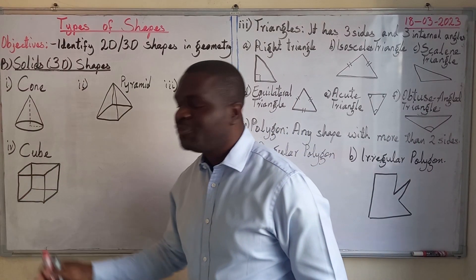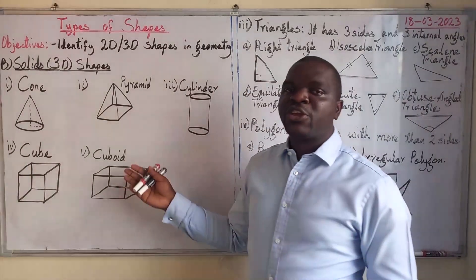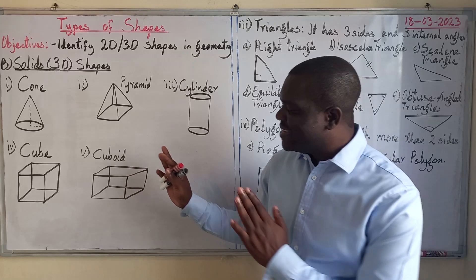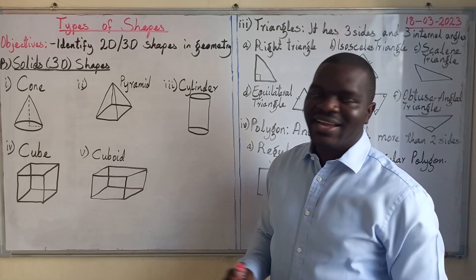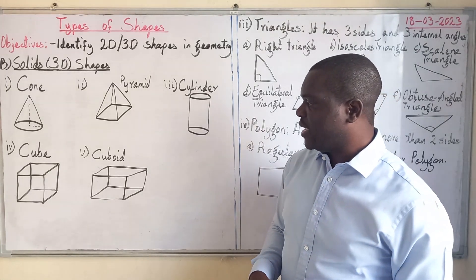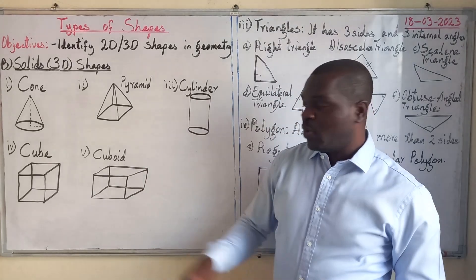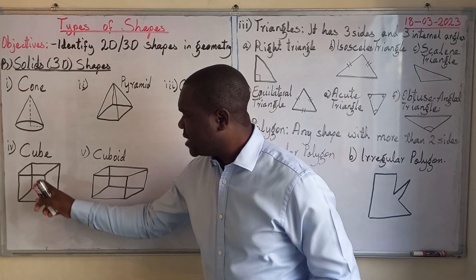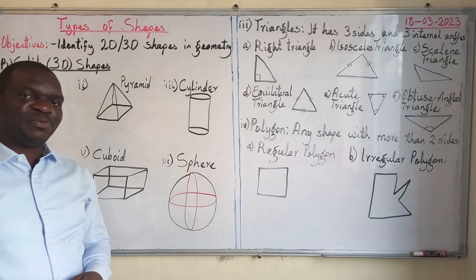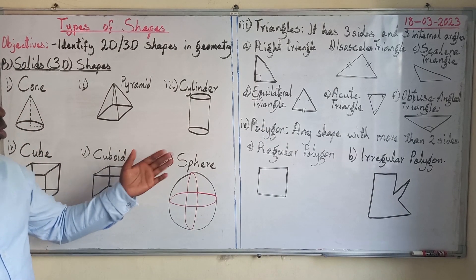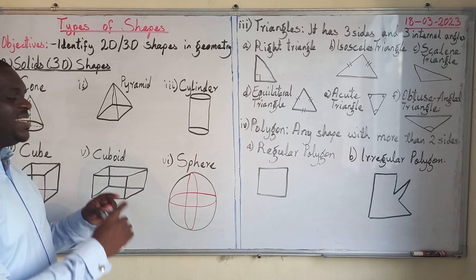The fourth solid shape is a cube — a cube has its faces in the form of a square. Next is a cuboid, which is slightly different from a cube because its faces are rectangles. A cuboid has a length, a width, and a height, while a cube has just one side measurement that is the same on all faces.